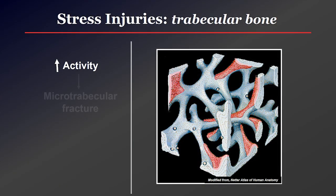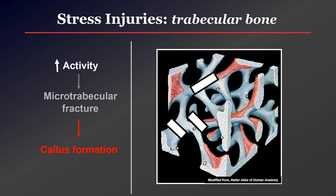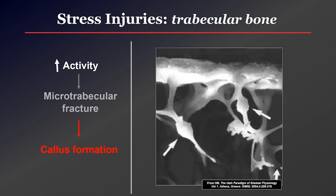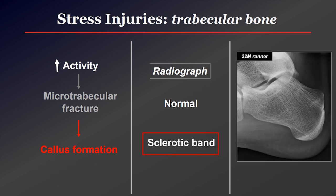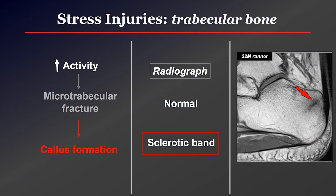For trabecular bone, increased activity leads to microtrabecular fractures, analogous to cortical microfractures. However, we can't really see these because trabecular bone is just not dense enough for a gray trabecular sign. What happens next is the bone lays down some callus at these fracture sites — little areas of microcallus along the trabecular fractures. On the radiograph it's going to be normal for much of the process, but as you begin to form that callus, we may pick up some faint sclerosis, usually a sclerotic band, as shown in this 22-year-old runner who had heel pain — confirmed on MRI.